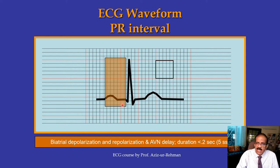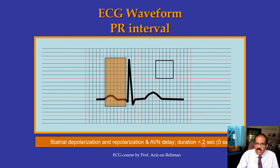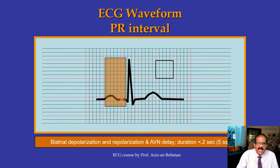Please note: the PR interval starts from the beginning of the P wave, including the P wave itself, and ends where the QRS complex starts. This small downward deflection is the Q wave, and that is not included in the PR interval.